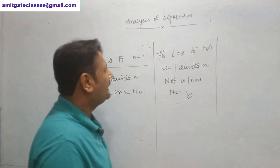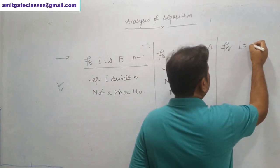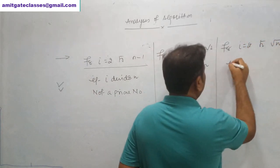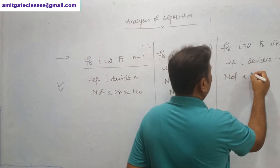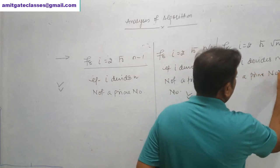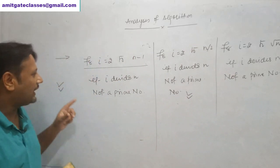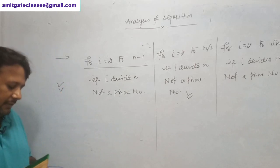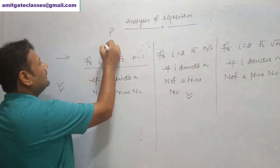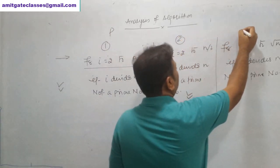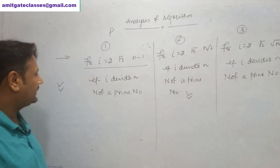A third student, who was quiet, gives a different solution: don't take n minus 1 or n/2 — instead take i equals 2 to root(n). If i divides n, then it is not a prime number. This is also a valid solution. So now for one problem we have three solutions, and the operation being performed is division.